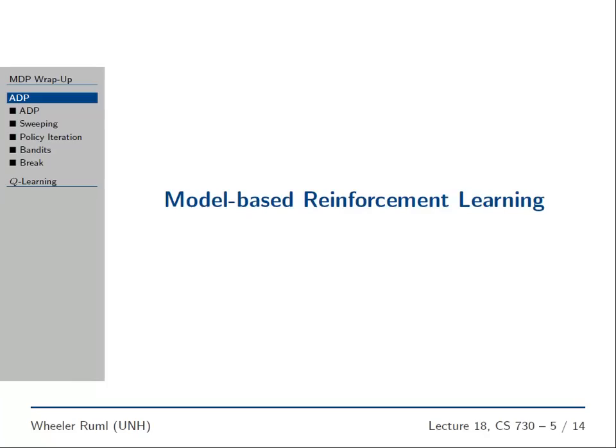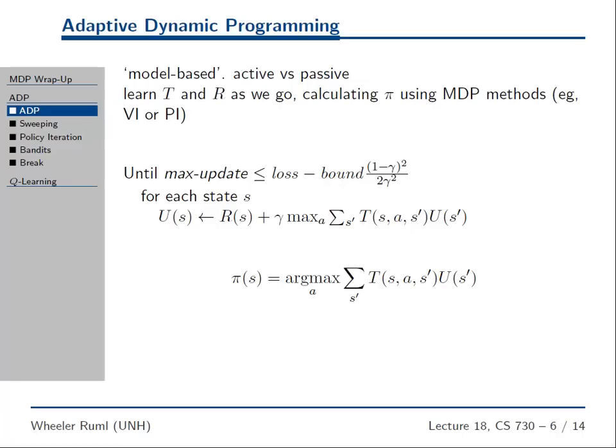So one way to do reinforcement learning is called model-based reinforcement learning and what you do is every time you do a transition, does that look a little fuzzy to you guys or am I just losing my mind? Every time you do a transition, there we go, every time you do a transition you update your model of the environment. So you learn T and R as you go and then you pretend you have an MDP and then you solve it with some procedure like say value iteration.